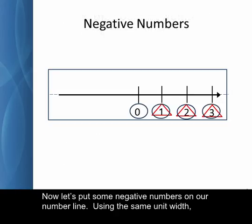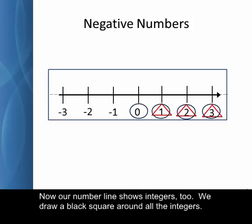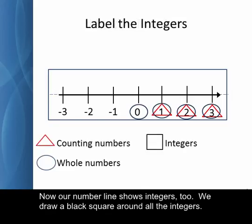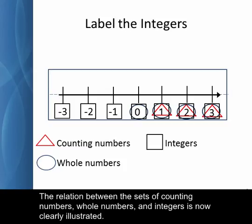Now let's put some negative numbers on our number line. Using the same unit width, make several marks to the left of zero and label them negative one, negative two, negative three, etc. Now our number line shows integers too. We draw a black square around all the integers. The counting numbers and whole numbers are integers too. The relation between the sets of counting numbers, whole numbers, and integers is now clearly illustrated.